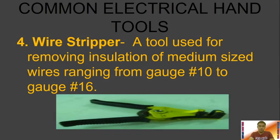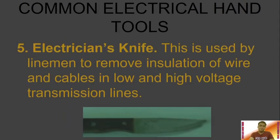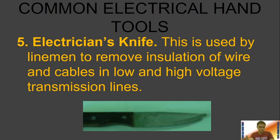Then we have the wire stripper — a tool used for removing insulation of medium size wires ranging from gauge number 10 to gauge 16, used to remove the covering of a wire. Then we have the electrician's knife, used by linemen to remove the insulation of wires and cables in low and high voltage transmission lines. It can come in different sizes and appearances.